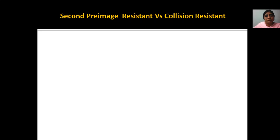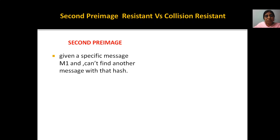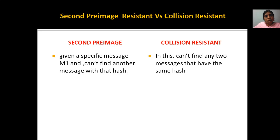We can compare second pre-image resistance versus collision resistance. Second pre-image resistance means: given a specific message M1, you cannot find another message with the same hash. Collision resistance means: you cannot find any two messages that have the same hash. In second pre-image resistance, given one message, you cannot find the hash of a second matching one. In collision resistance, if you have two different messages with the same hash values, you cannot determine which hash belongs to which message.